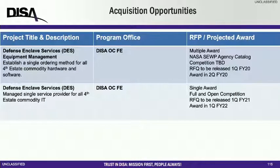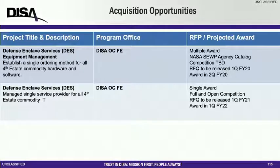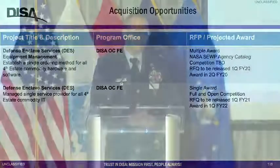This means everything from a Tier 1 phone call entry enterprise service desk call-in function all the way up through Tier 3 back shop and engineering and development work. That's the contract effort that will be coming out. The timelines for that contract — we're starting the major acquisition work now, but we're headed towards an award in 2022. This is a significant effort, and we expect to have industry days and other items to discuss between now and then.